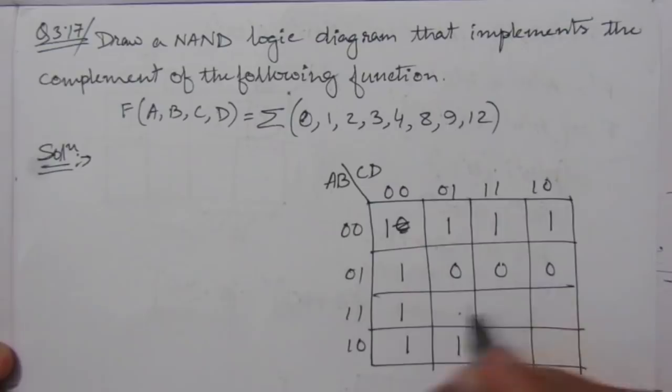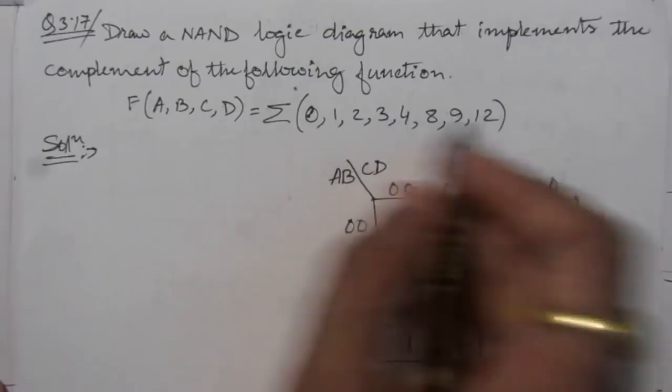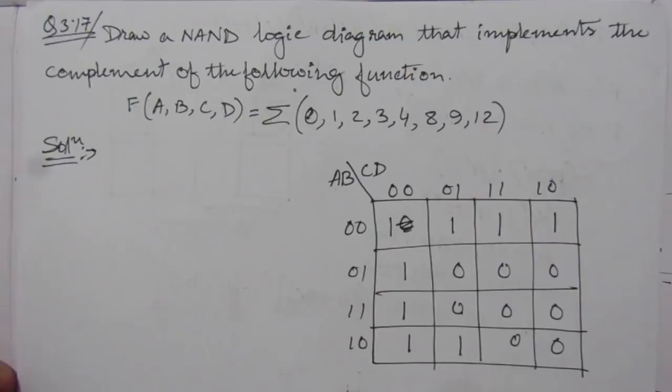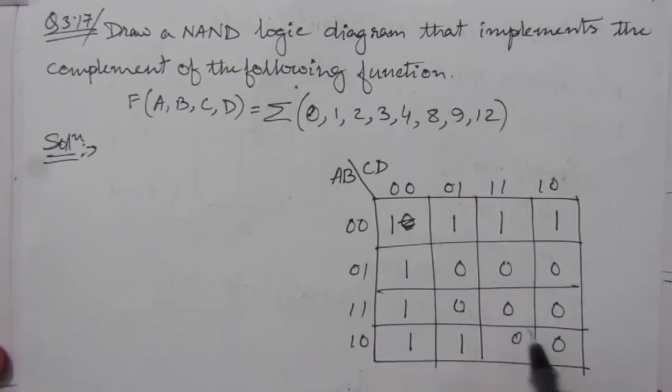In the question, we are asked to implement the complement of the given function. We have to find out the complement and use it to make the logic diagram. Complement means we have to consider the zero values in the K-map. From this table, we will take the zeros and from that find out the logic expression for the function F.